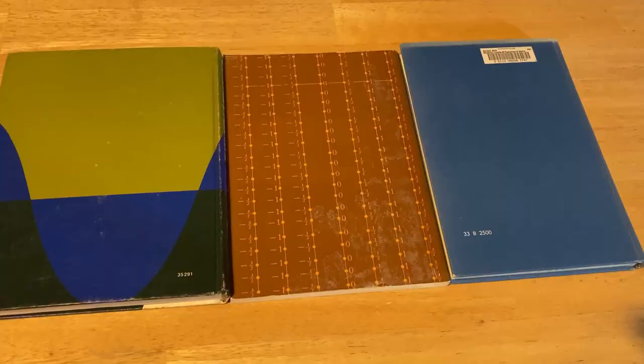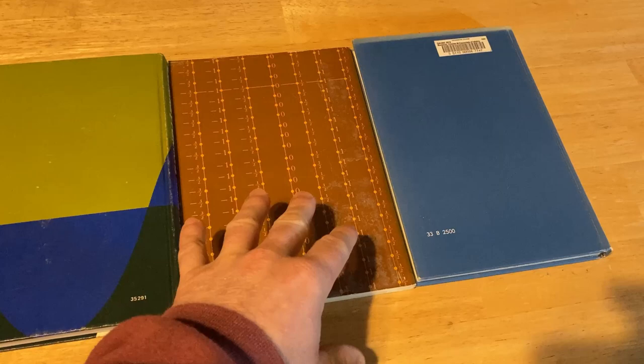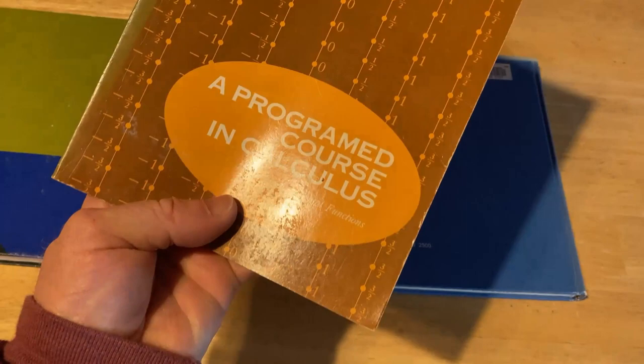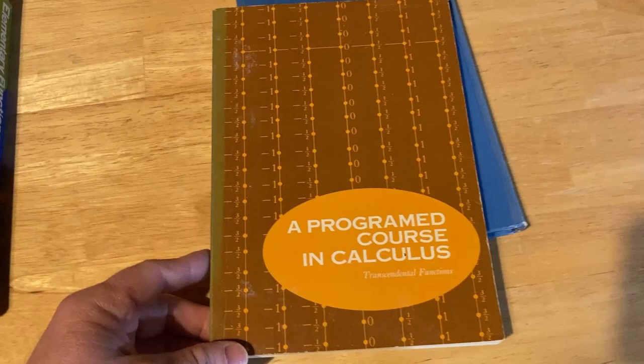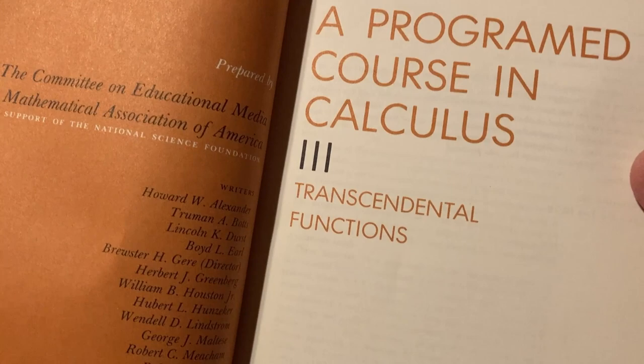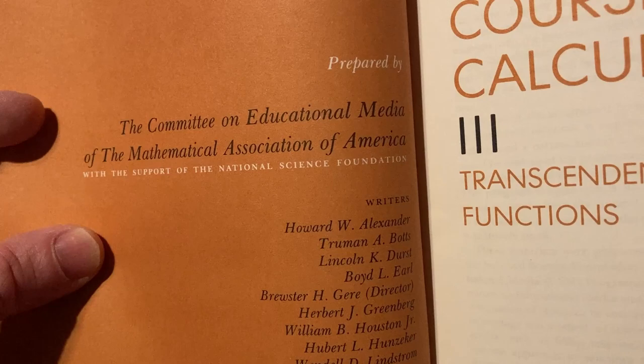In order to understand this next book, in theory you're supposed to understand this book first. So this is set up in a chronological order. This book is a book that was only printed once. It's called A Programmed Course in Calculus Transcendental Functions. And I don't think it's possible to find this book. I was not able to find it on the internet prior to making this video. This book was written by several people, not just one author.